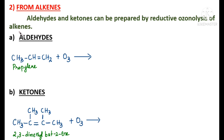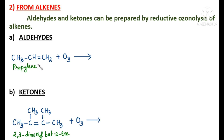Aldehydes can also be obtained by the reductive ozonolysis of alkenes. Those alkenes which do not possess branching at the carbon atoms involved in the double bond can produce aldehydes. When we use an unsymmetrical alkene, ozonolysis gives two types of aldehydes. When we use symmetrical alkenes, we get the same type of aldehyde.